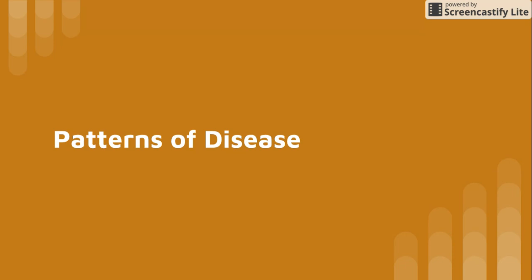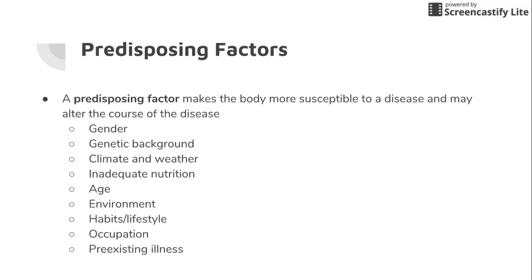The occurrence of disease ultimately depends on the resistance of the host to the activities of the pathogen. If you're a healthy individual with a healthy immune system, even if the pathogen tries to get into you, your body is still going to be able to fight it off versus somebody else that can't. Certain predisposing factors can affect the occurrence of disease, making somebody more susceptible or altering the course of the disease itself.